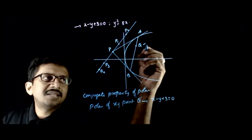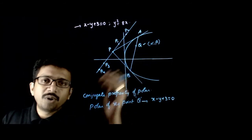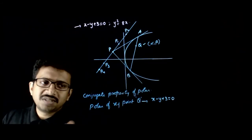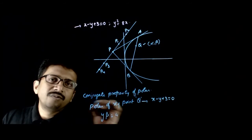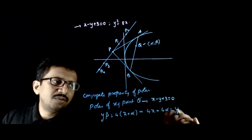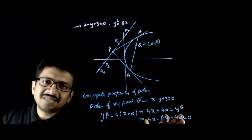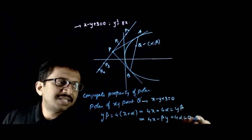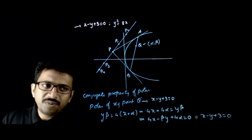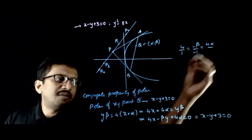The polar of the required point Q should be the same as x - y + 3 = 0. Let Q = (α, β). The polar of Q with respect to y² = 4x is given by T = 0, which gives y·β = 4(x + α). This simplifies to 4x - βy + 4α = 0. This is the polar of (α, β) and it must equal x - y + 3 = 0. Since the two lines are equal, the ratios of coefficients must be the same: 4/1 = -β/(-1) = 4α/3.